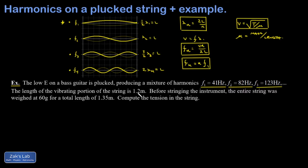I'm given the length of the vibrating portion of the string. So that's just between the bridge and the nut. But there is some string beyond that for wrapping around a tuning peg. And I said before stringing the instrument, the entire string was weighed at 60 grams for a total length of 1.35 meters. The whole string is longer than just the vibrating portion when it's installed on the bass. And then I want the tension in the string.